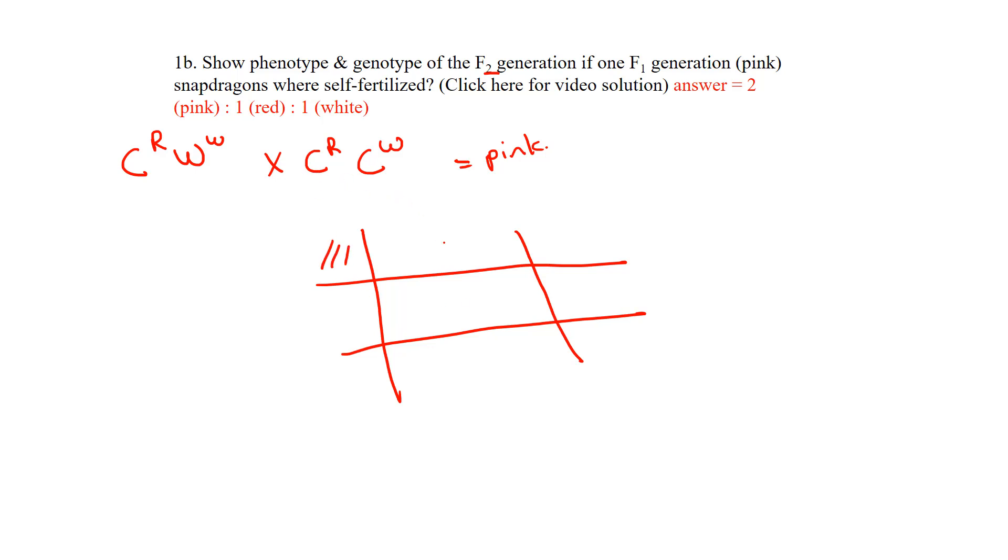Isolate the alleles into gametes: C^R and C^W. It's arbitrary which allele you put first, but if you use R first, keep it consistent throughout the question to make interpretation easier. Now let's create a quick legend.